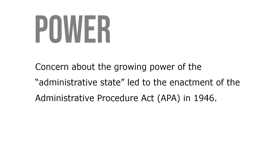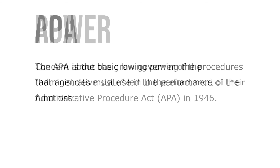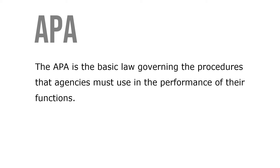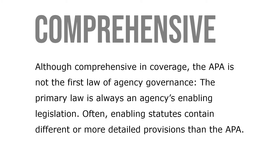Concern about the growing power of the administrative state led to the enactment of the Administrative Procedures Act, known as the APA, in 1946. The APA is the basic law governing the procedures that agencies must use in the performance of their function. Although comprehensive in coverage, the APA is not the first law of agency governance. The primary law is always an agency's enabling legislation.